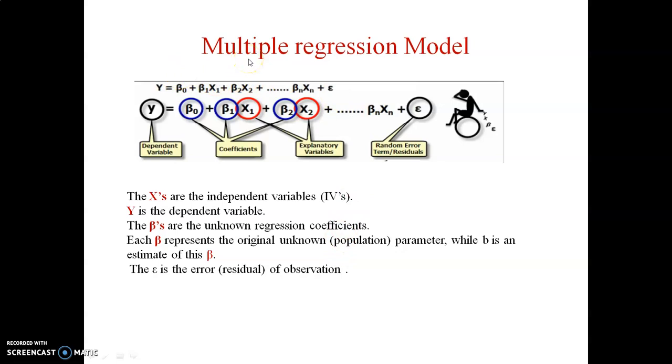Here this is a multiple regression model. We have increased the number of independent variables to n plus epsilon, the error term which follows normal distribution with mean 0 and variance 1. Y is the dependent variable, beta 0, beta 1, beta 2, beta n are all coefficients. X1, x2, xn are all explanatory variables or independent variables. Epsilon is the random error residual term.